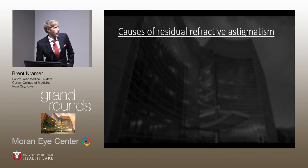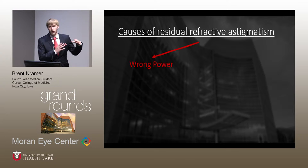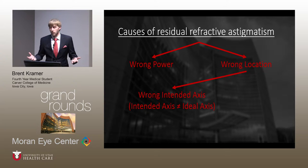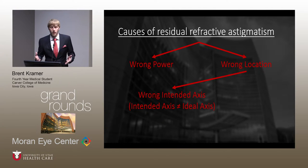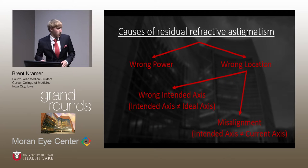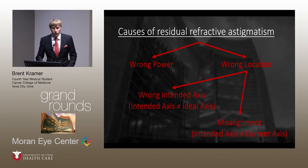A quick background on residual refractive astigmatism: there are two potential causes — wrong power (the power of the toric itself) or wrong location. Wrong location breaks down into two subcategories: wrong intended axis, meaning you intended to place the IOL at 20 degrees but the actual ideal axis is 30 degrees. This can be caused by measurement or calculation errors, unaccounted-for surgically-induced astigmatism, or unaccounted-for posterior corneal astigmatism. The other category is misalignment, which is mainly rotation or placing the IOL off-axis to begin with.